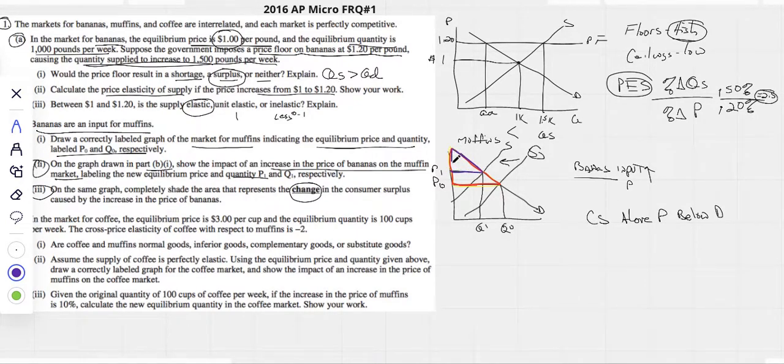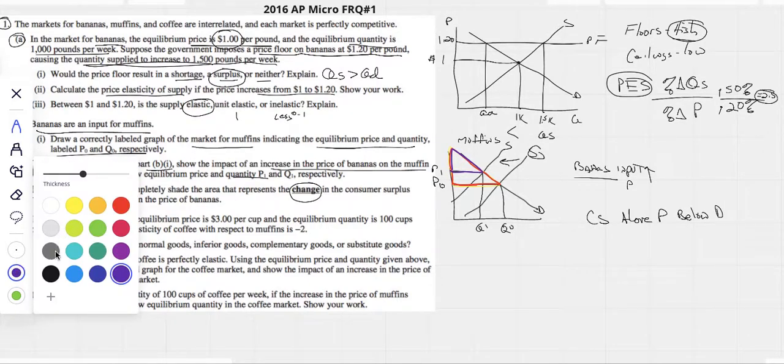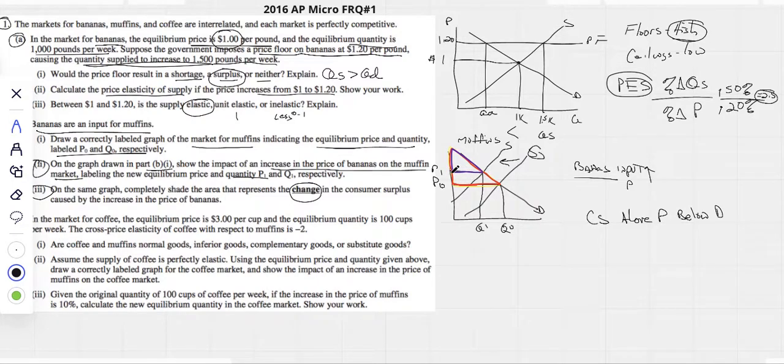So, what we lost, I'm going to do it in black. Our loss was this area here. Remember, if they're talking about a change, it's either what's been gained or what's been lost. So, all of this shaded in area would have been the loss, if that makes sense. All right, let's head on to C.